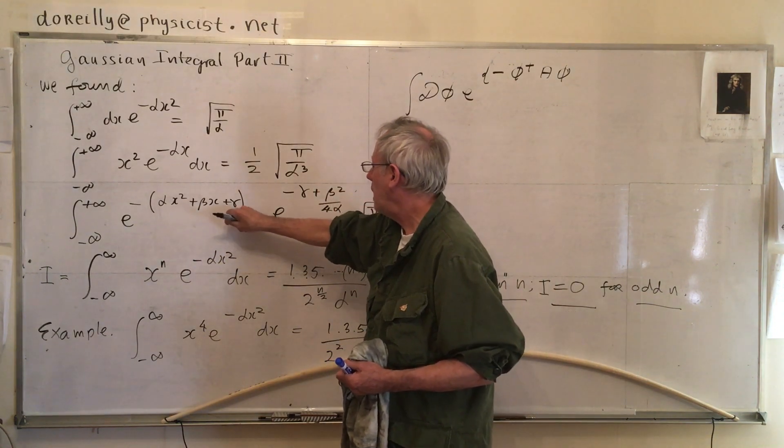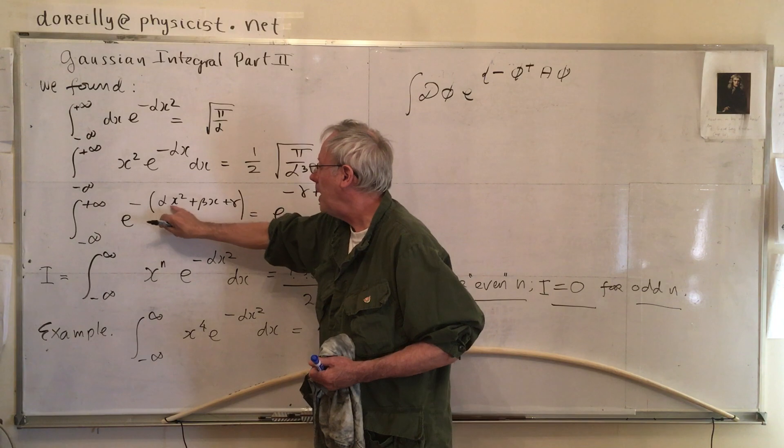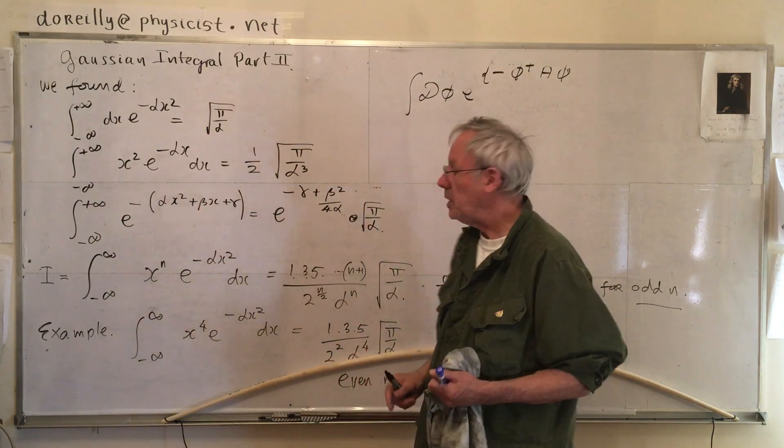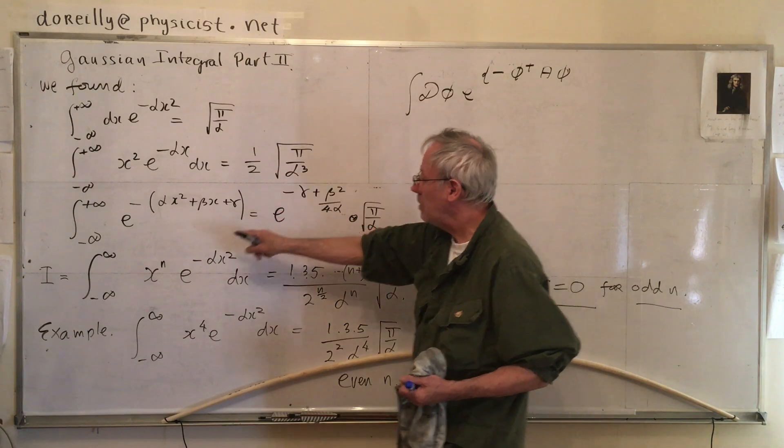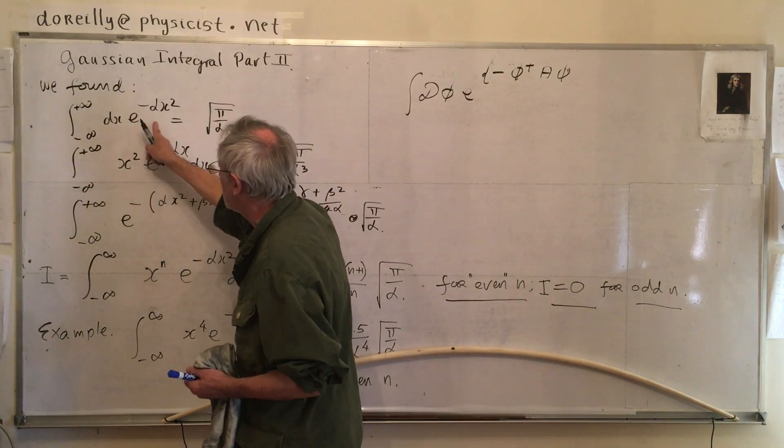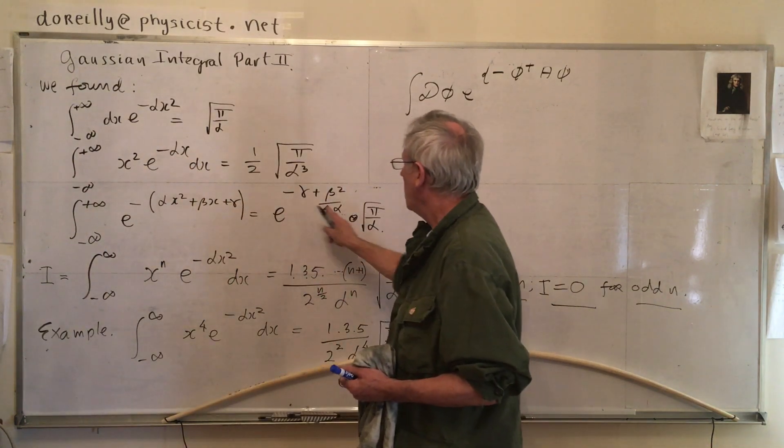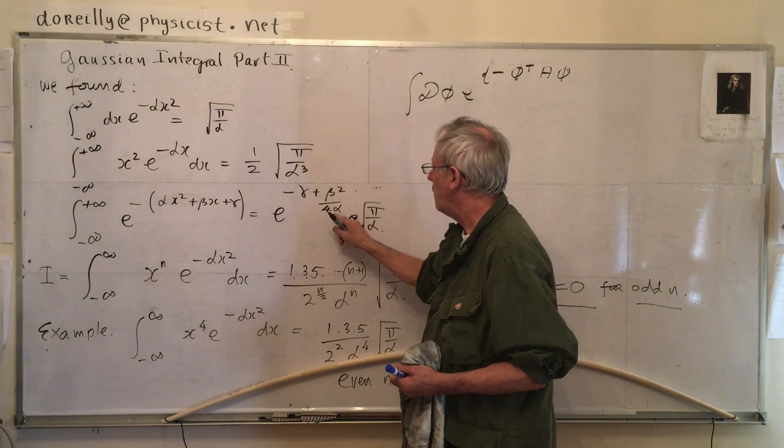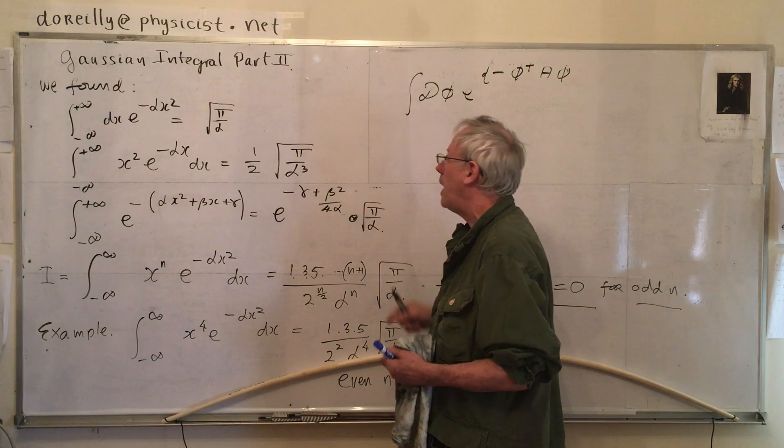We saw the general quadratic. The general quadratic, alpha x squared plus beta x plus gamma. You know, by completing the square, we can get the integral from minus infinity to infinity. Using this result, is equal to e to the minus gamma plus beta squared over 4 alpha, all times root pi over alpha.